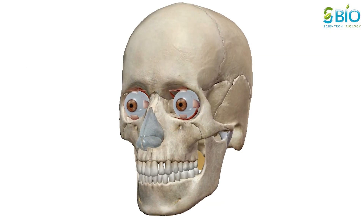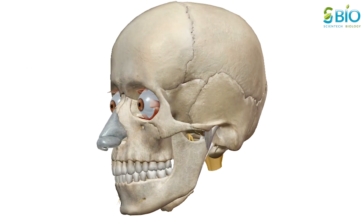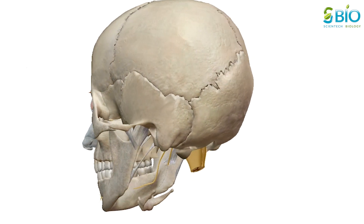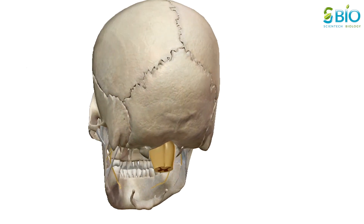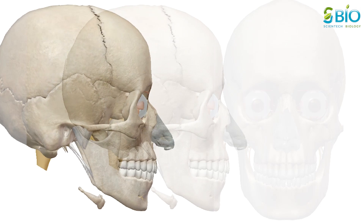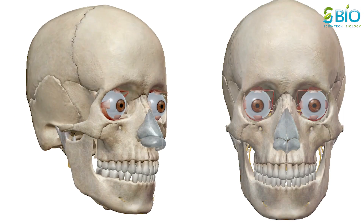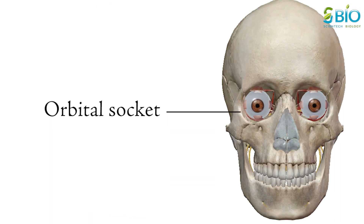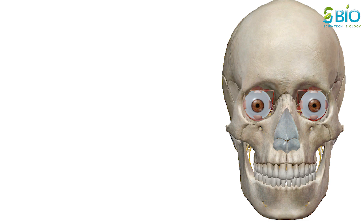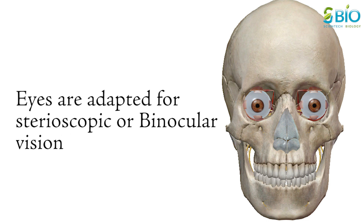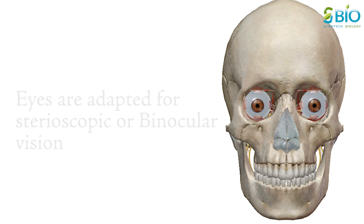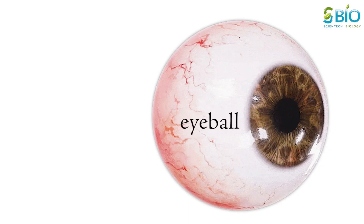The human eyes are the most complicated sense organ in the human body. The human eyes are situated in bony orbital sockets on the anterior aspect of the head and cushioned in fatty connective tissue. They are directed forward and adapted for binocular or stereoscopic vision. Eyes are spherical, hence each eye is often referred to as an eyeball.